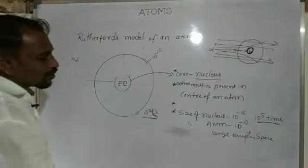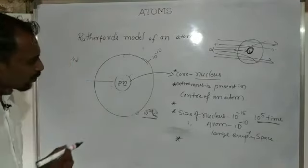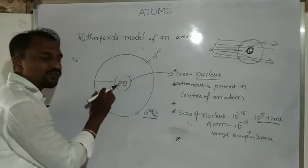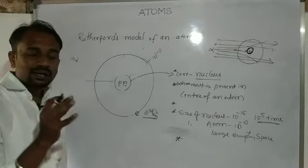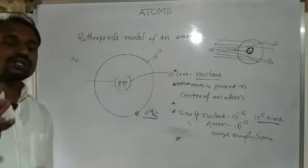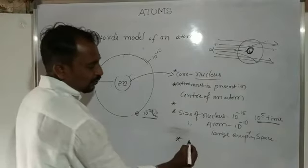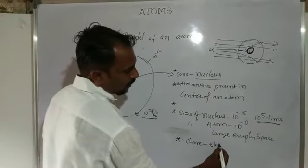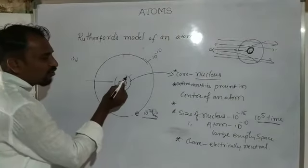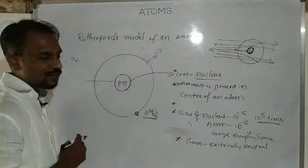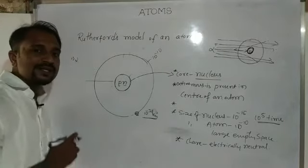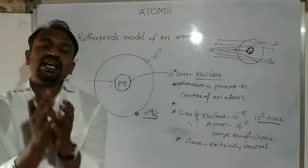The next point is the charge on the atom. The number of positive charges — protons — present in the atom is equal to the number of electrons, which are negative charges. So the atom is electrically neutral because the number of protons equals the number of electrons revolving around the nucleus.